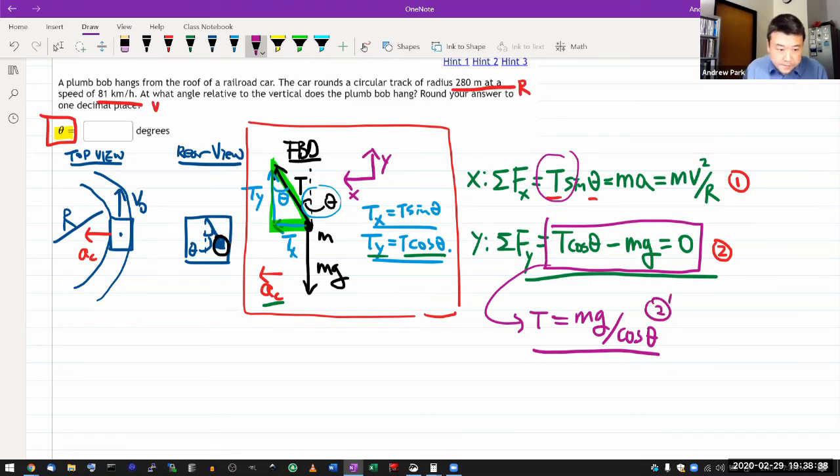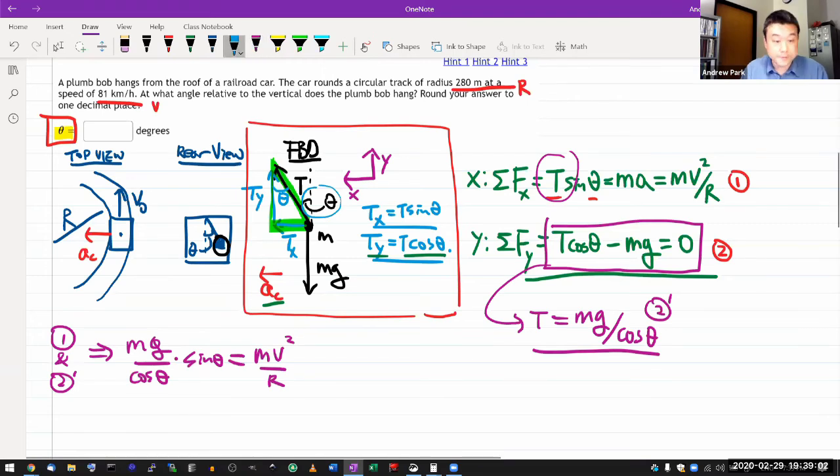That's something I can plug into equation one. So from equation one and two prime, what I get is mg divided by cosine theta times sine theta is equal to mv squared over r. And as I was hoping, mass canceled. Great.